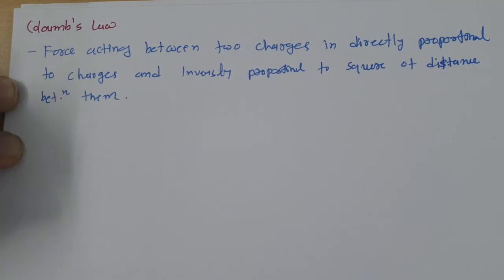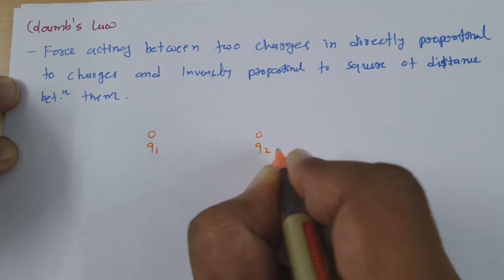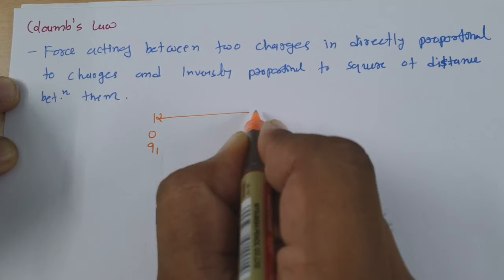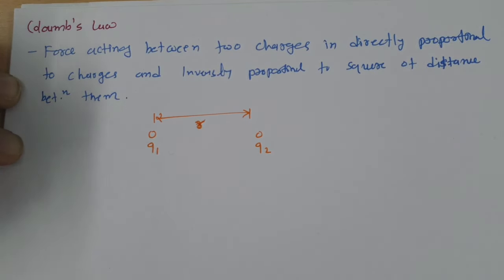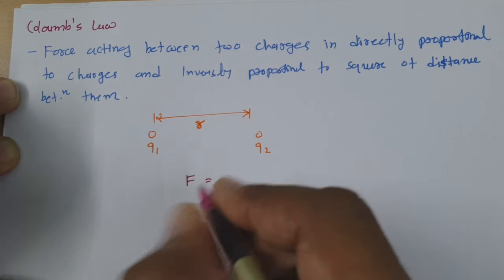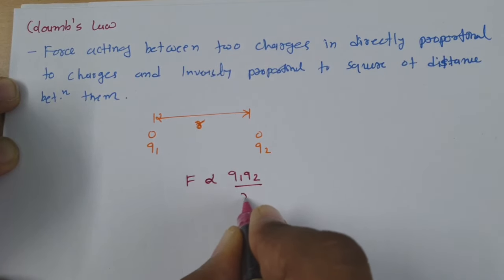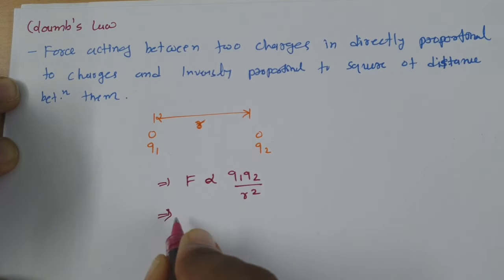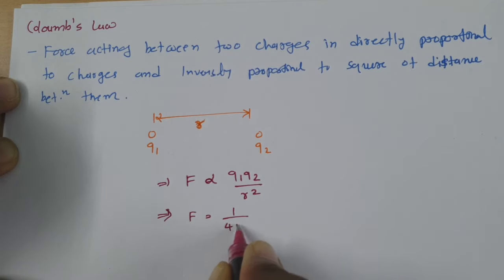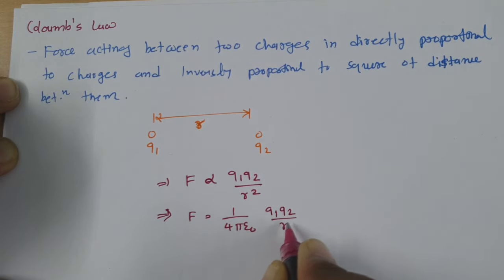If I consider two charge particles, let us say one charge is Q1 and the second charge is Q2, and if the distance between the two charges is R, then the force acting between these two charge particles is directly proportional to Q1 and Q2 and inversely proportional to the square of the distance between them. The proportionality constant is 1 over 4πε₀, so F = (1/4πε₀) × Q1Q2 / R².